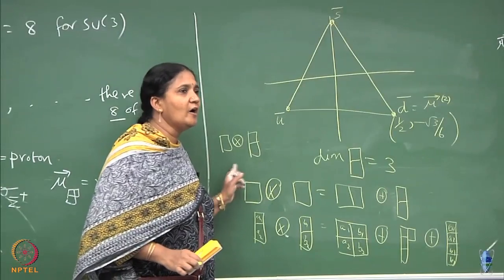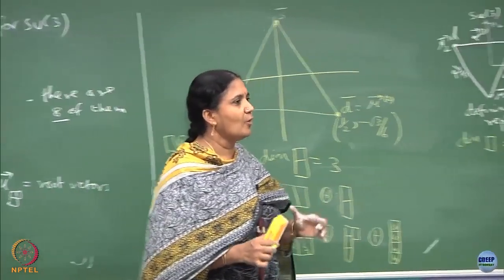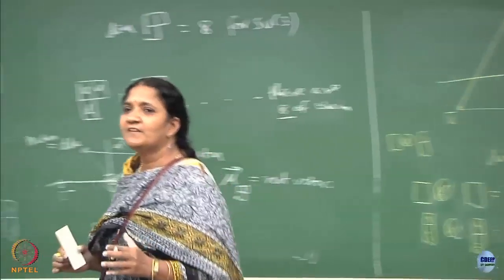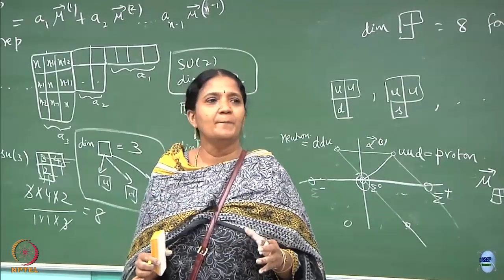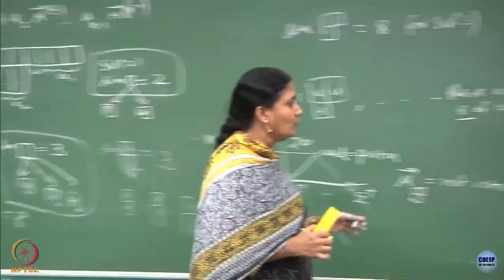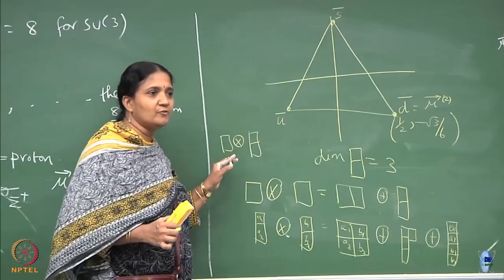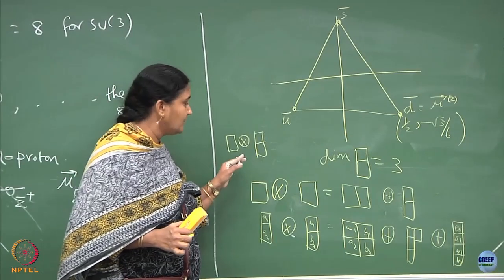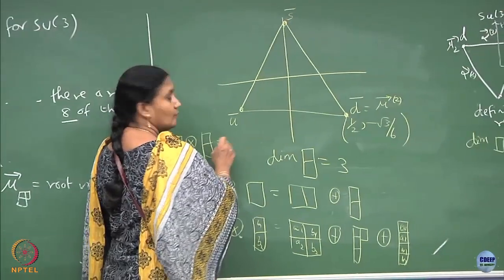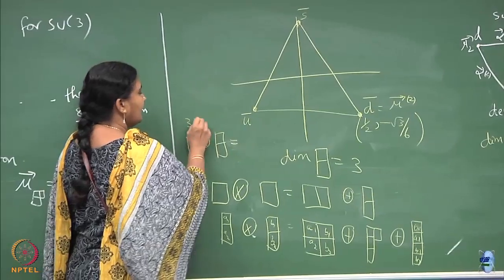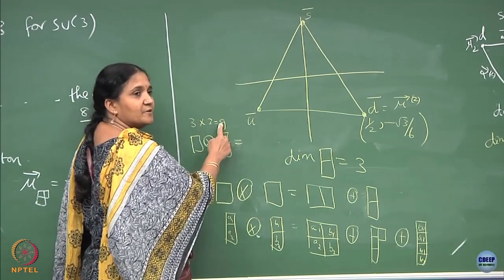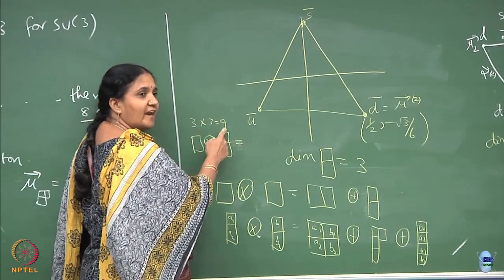A quark and an anti-quark together is a composite object called a meson. In nature you see a composite particle which is a bound pair of quarks and anti-quarks called mesons. To see that bound state you take a tensor product of the fundamental objects — one quark and one anti-quark — and they decompose into irreps. How many dimensions? It is 3 × 3 = 9. The quark is 3-dimensional, the anti-quark is also 3-dimensional, giving a 9-dimensional reducible representation.